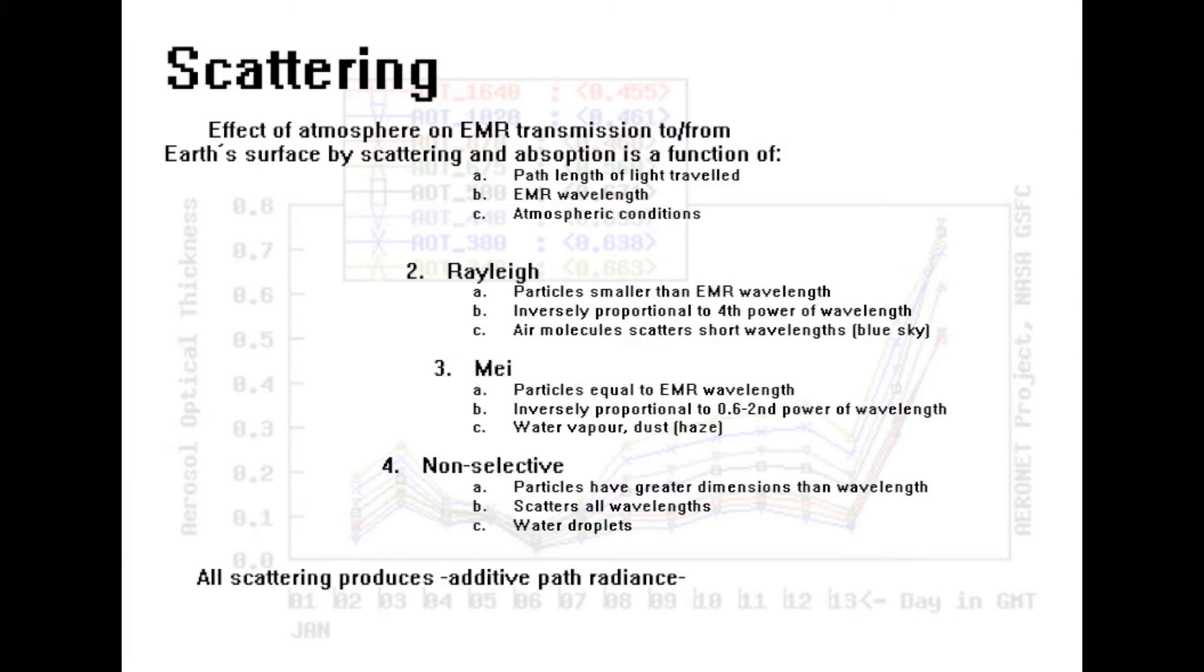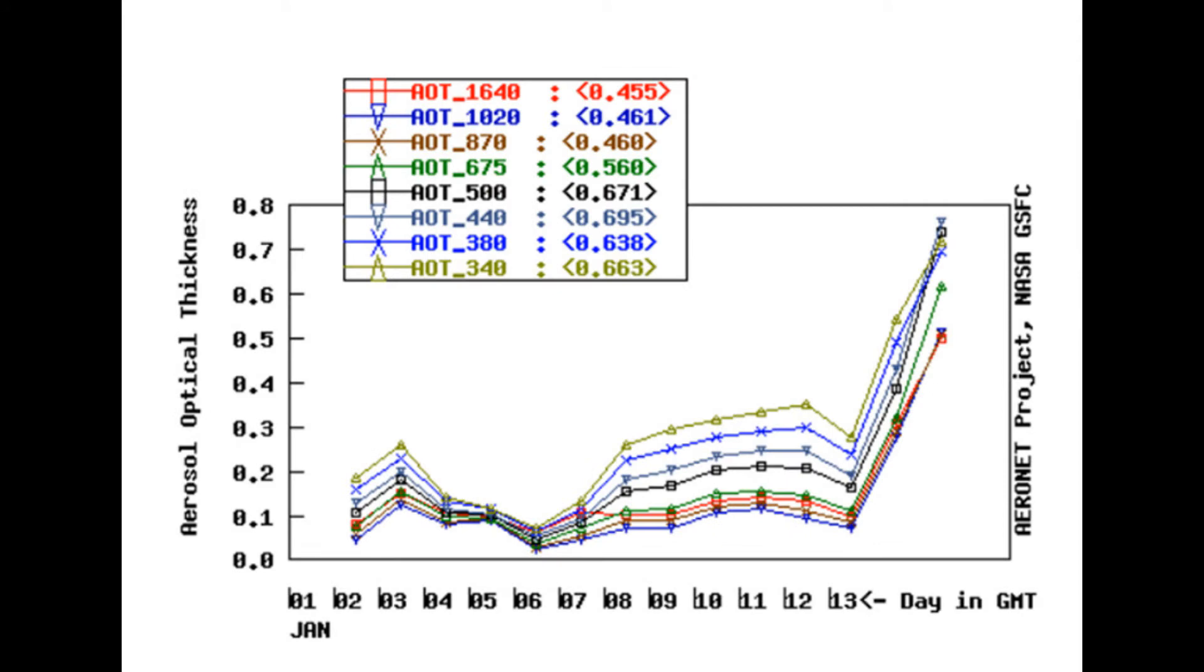Talking about scattering: if the EMR wavelength is smaller than particles, then the particles won't really affect the EMR in any way. But if the particles are bigger than the wavelengths, then it will disturb the light coming in. All scattering produces additive path radiance, meaning that whenever light is scattered, it's no longer untouched irradiant sunlight; it's now radiant light. Here you can see this is a graph of January and different days, and the aerosol optical thickness changes on each day depending on how many particles are in the air and how big they are compared to the wavelengths coming in at that day.